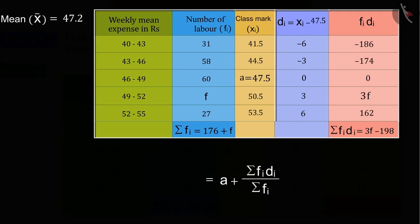Putting the value of mean expenditure x, assumed mean a, summation fi di, and summation fi in the above formula,